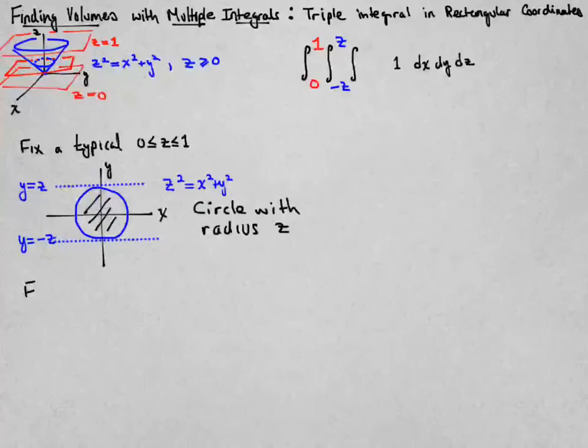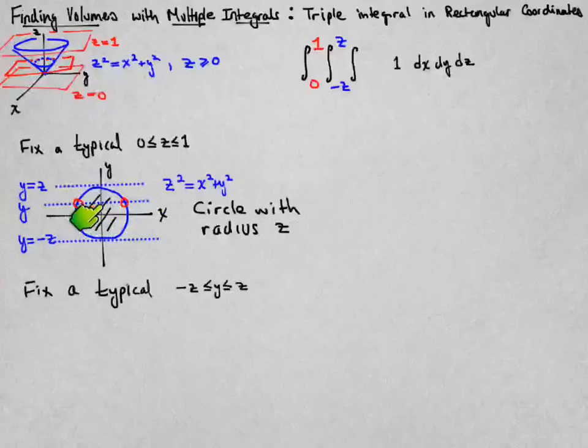Now, let's fix a generic value of y in between those two. So graphically, that means to draw some horizontal line at that y value. And it's going to enter at this red circle, exit at that red circle there. And I need to determine the x values for where those red circles are.